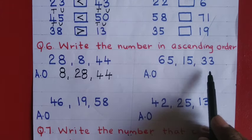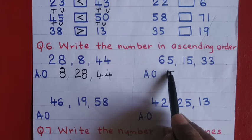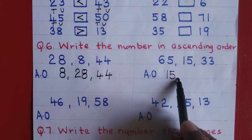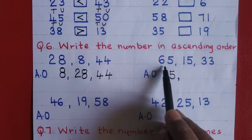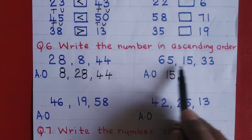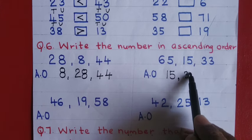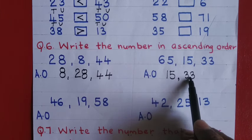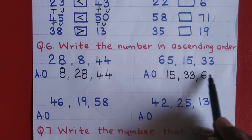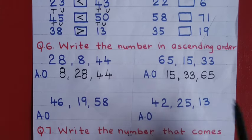For sixty five, fifteen, and thirty three: fifteen has only one ten so it is the smallest number. Then compare sixty five and thirty three — thirty three has three tens so it comes in second place, and sixty five comes at the end. That is the ascending order.